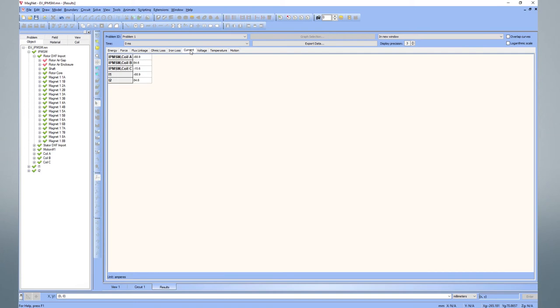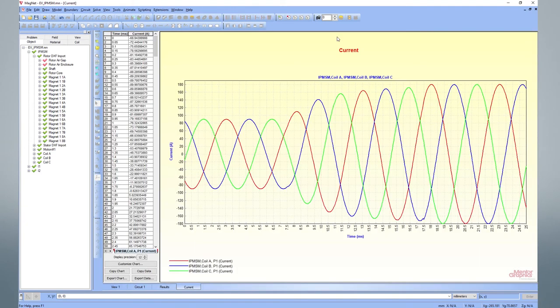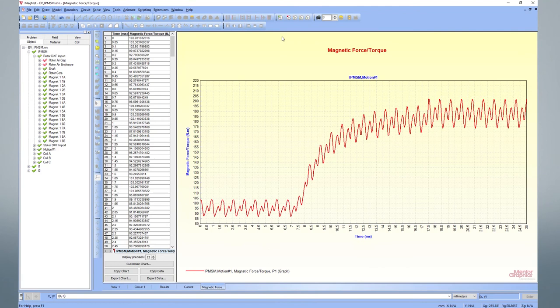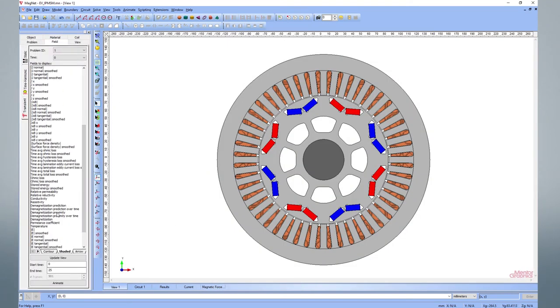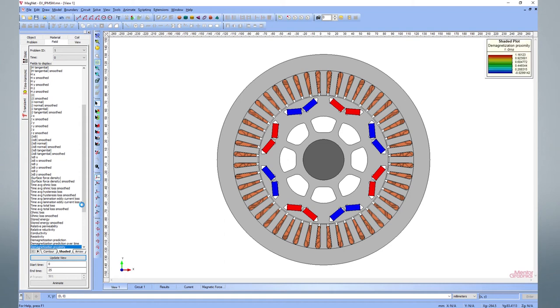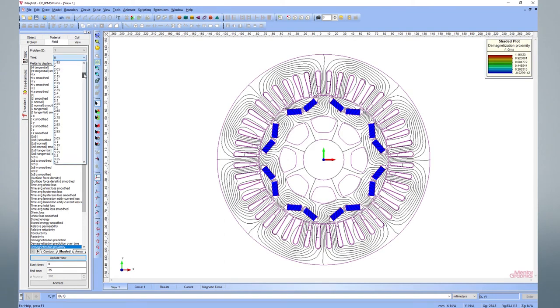Then perform results analysis, such as current and torque. You can also show the demagnetization fields before or after demagnetization.